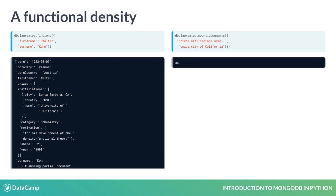MongoDB allows you to query document substructure using dot notation. Here's a count of laureates. We reach into the prizes array to query on the affiliations field across prizes. From there, we reach again, this time to query on the name field across affiliations. We count laureates with at least one prize affiliation name as specified. The dot notation gives a full path to a field from the document root.